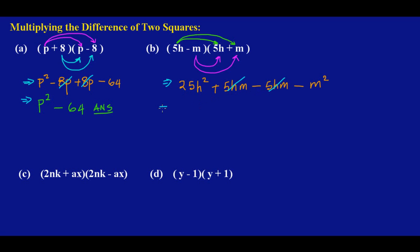So essentially what we have left here is we have our positive 25h squared minus m squared, and that's our answer. And it's pretty easy.